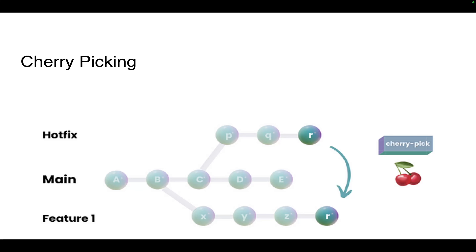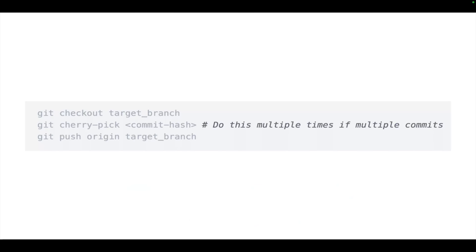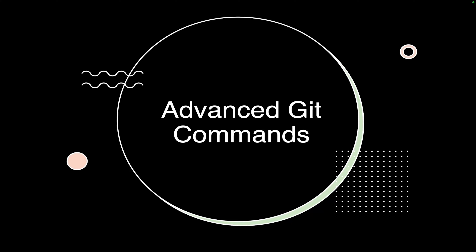Cherry picking is useful for selectively incorporating changes from one branch into another, especially when merging an entire branch is not desirable. However, use it judiciously as it can lead to duplicate commits and divergent histories if misapplied. For example, if you have a hotfix branch and a feature branch, you can take a commit from the hotfix and apply just its changes to your feature branch. To perform this: identify the commit hash using `git log`, then run `git checkout <target-branch>`, followed by `git cherry-pick <commit-hash>`, and finally `git push origin <target-branch>`.